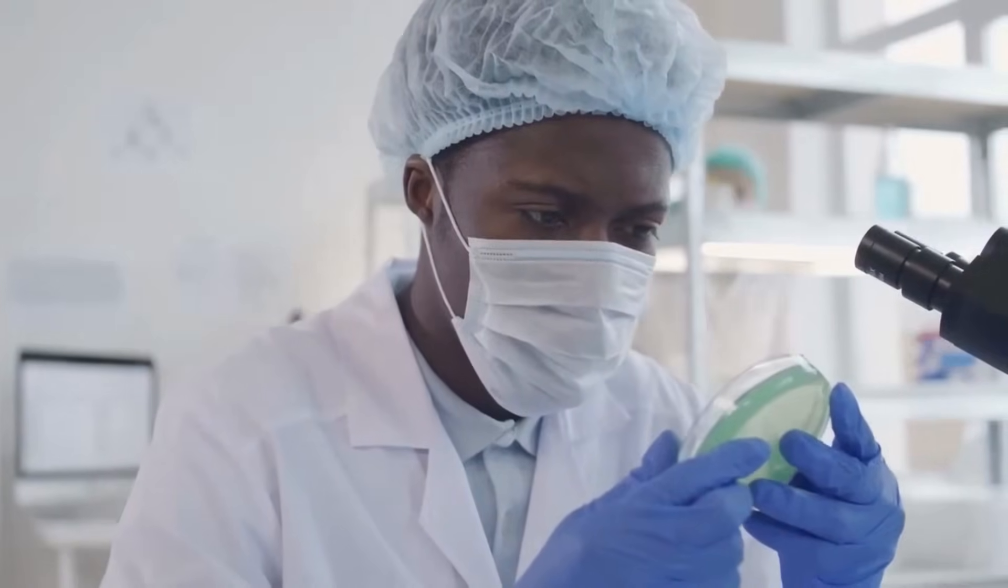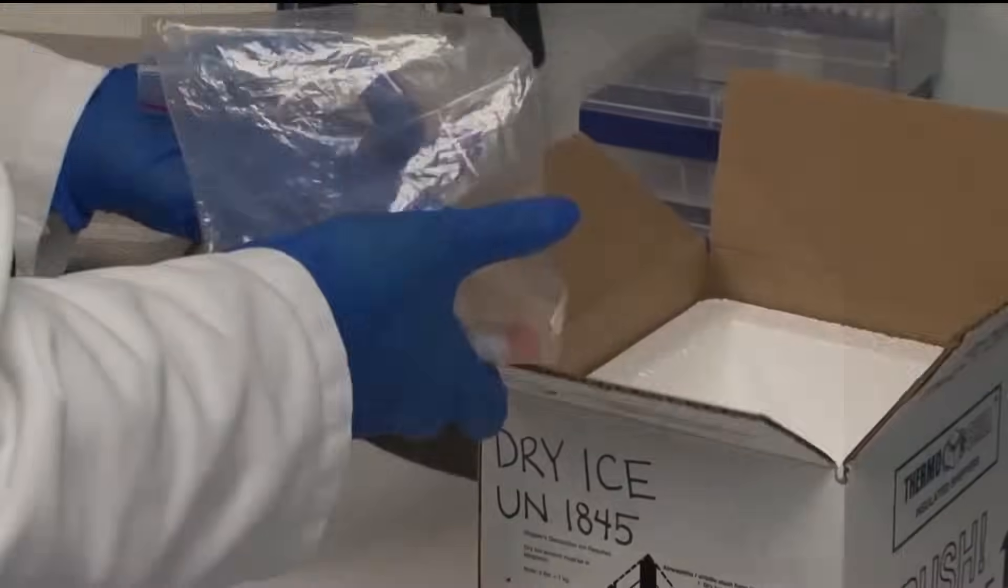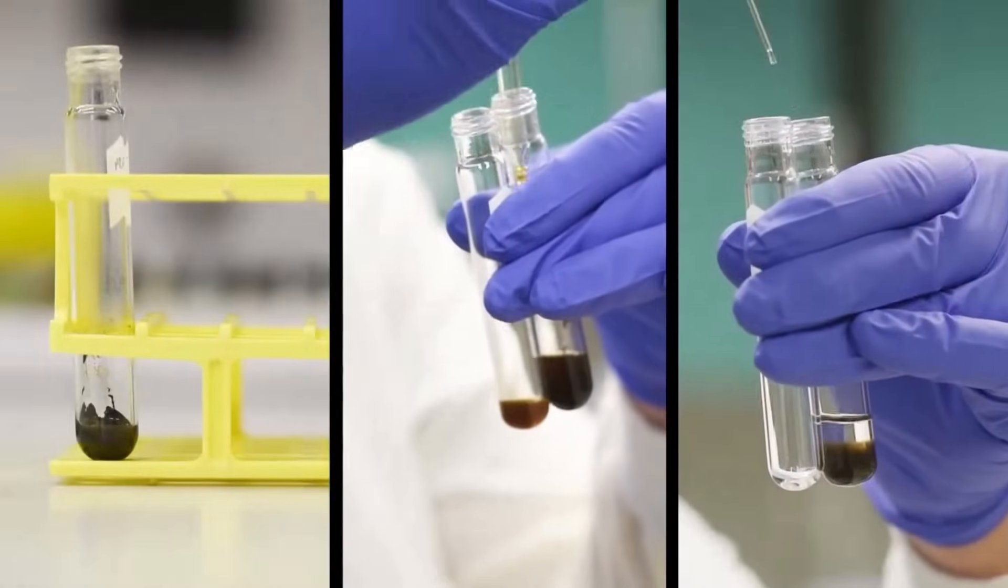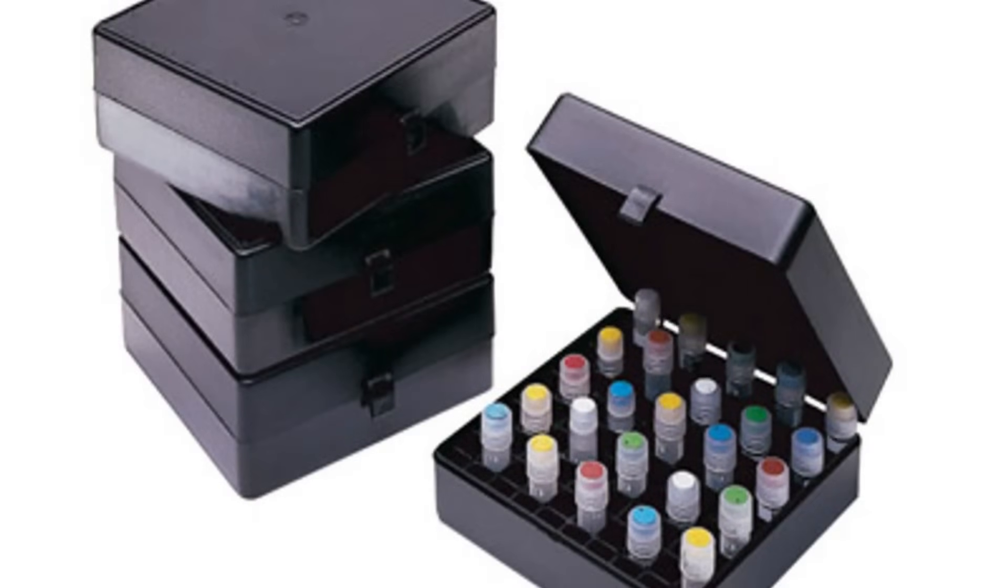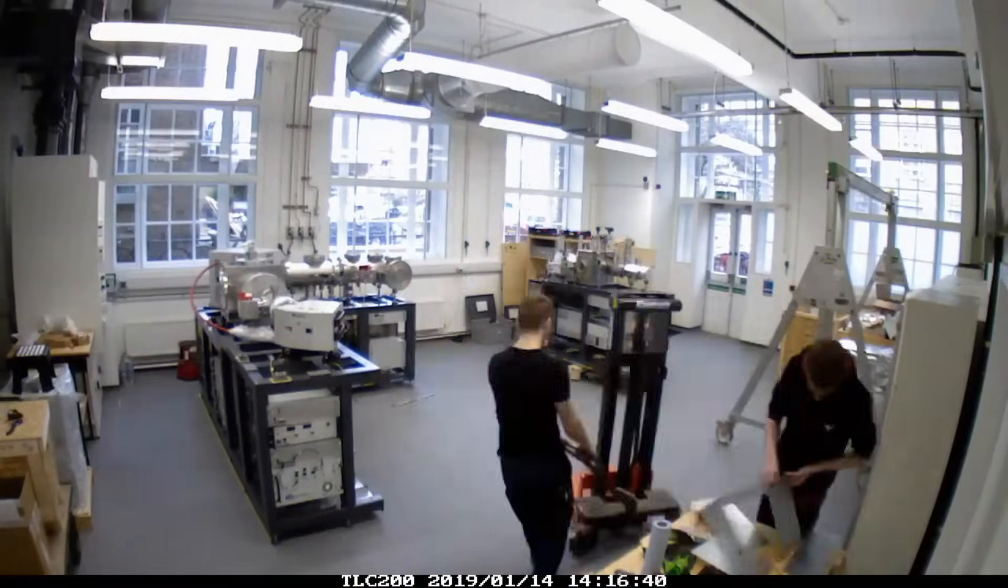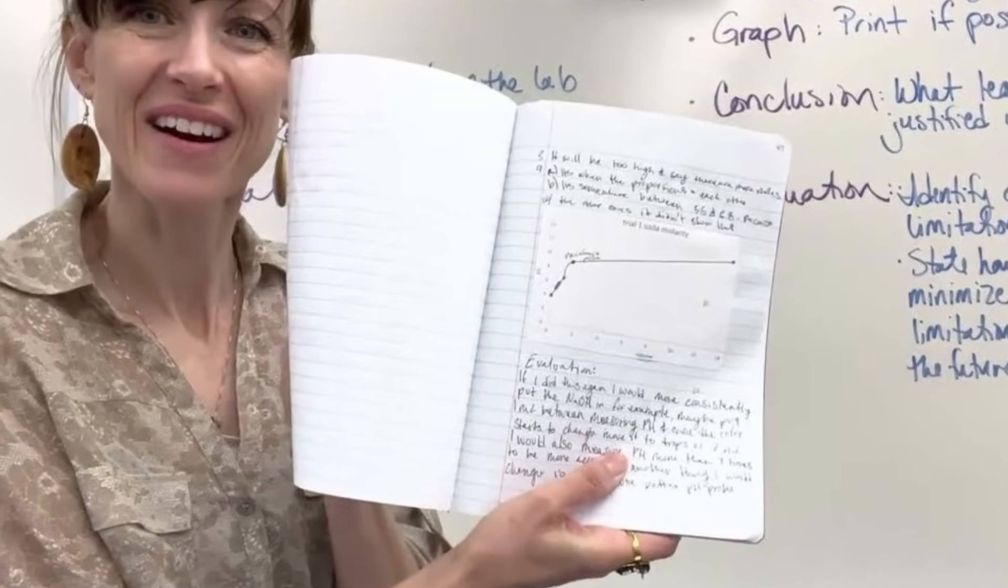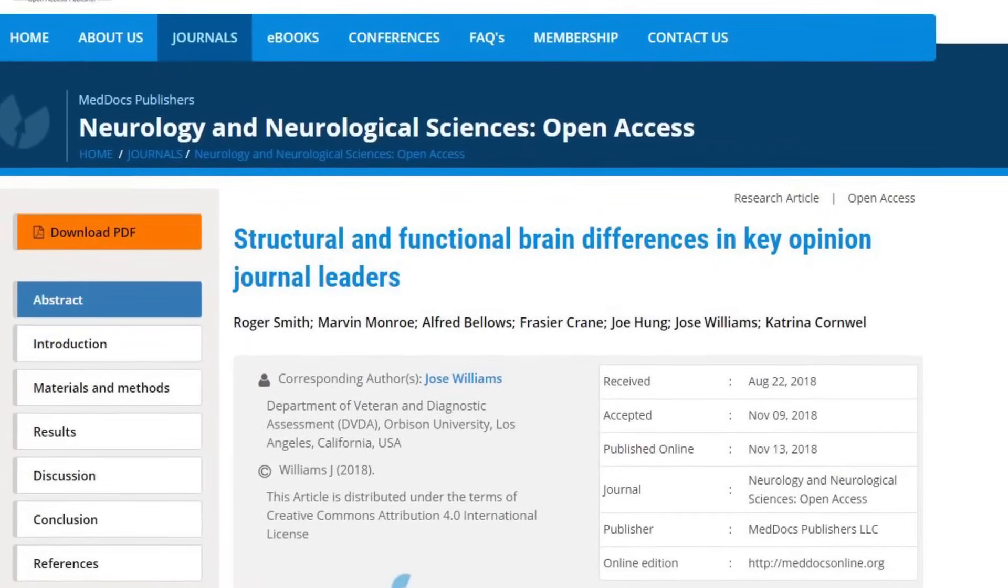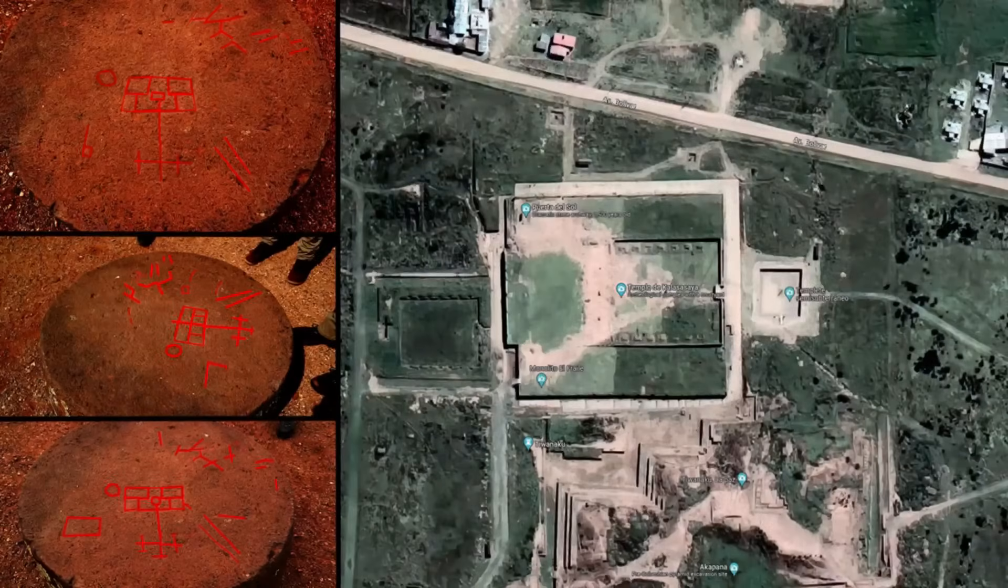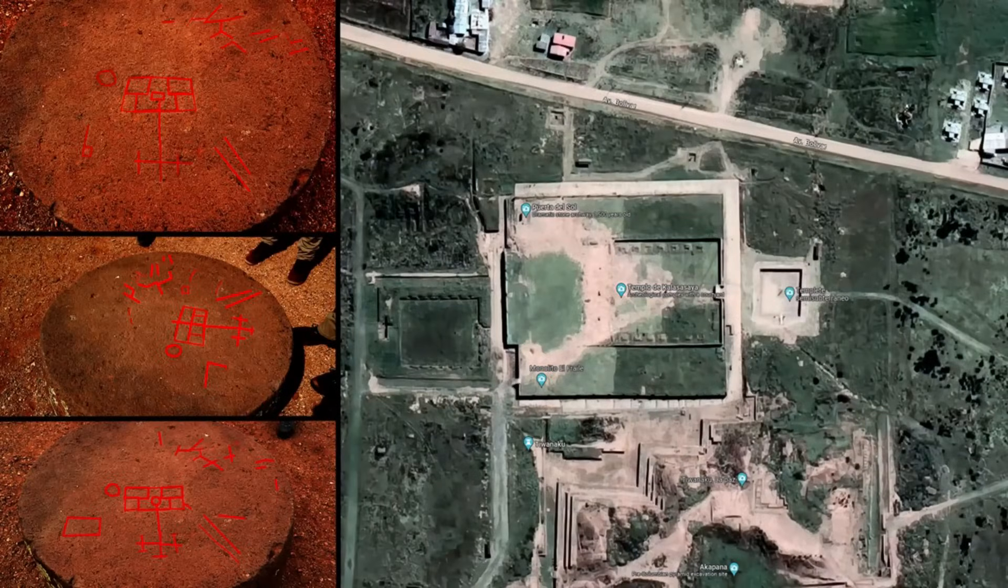A blind test is now underway. Microcore samples from at least eight H-blocks will be divided and sent to independent laboratories under coded labels. Each lab will perform SEM, EDS, and organic compound analysis without knowing the sample's origin. If organics are present, they will undergo acid-base-acid pretreatment and accelerator mass spectrometry for radiocarbon dating. All results, whether confirming or refuting the hypothesis, will be published in full, including chain-of-custody logs and raw spectra. If the organo-mineral binder is confirmed and its age aligns with the construction window of AD 536-600, Puma Punku would represent the earliest known large-scale geopolymer technology in the Americas. If not, the search for answers continues.